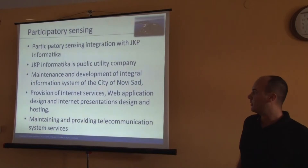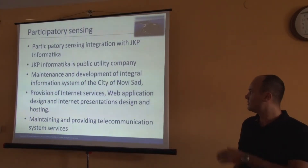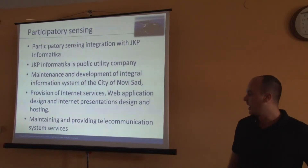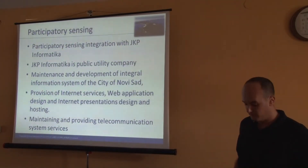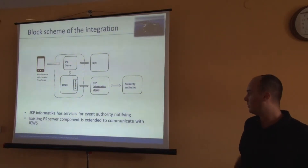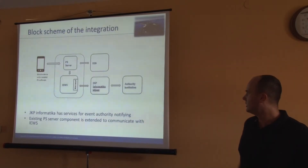Now I will provide some information about the deployment of the sensor application in the city of Innoisad. We use this company, Informatica, which is a public utility company for Innoisad. In Innoisad we usually only know about bills which come every month from Informatica, but they also maintain a lot of information systems for Innoisad — for example, IP cameras for the city. What is interesting for us, and why we chose them, is that they have a connection with the authority institution — some kind of police in Innoisad. This picture shows the integration of a participatory-centric application with Informatica, which is perhaps the most important link with this authority institution.